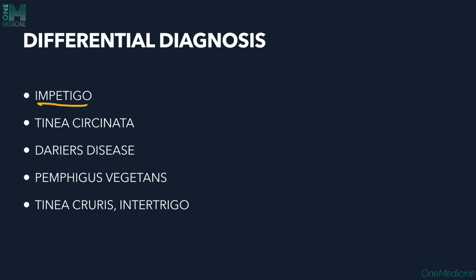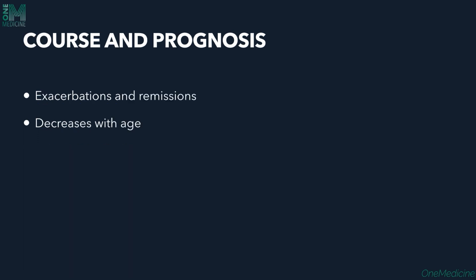Differential diagnosis includes: candidal infection, tinea circinata, Darier's disease — another acantholytic disorder affecting seborrheic areas with keratotic lesions — pemphigus vegetans (when vegetating lesions are in the axilla and groin), but pemphigus vegetans won't have a 70% family history. Tinea cruris and intertrigo with peripheral extension and central clearing can also mimic Hailey-Hailey disease, but itching is more prominent and features of infection are present in those conditions.